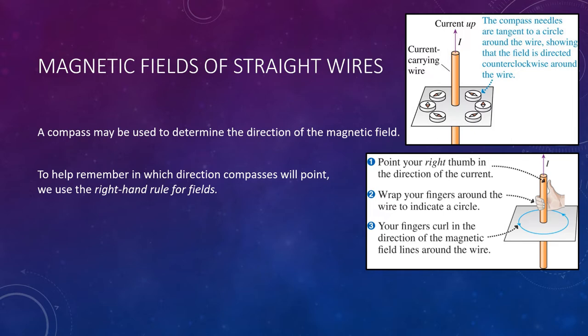To apply the right-hand rule for fields: take your right hand and wrap it around the wire. Point your right thumb in the direction of the current — note it does not work with your left hand. Then wrap your fingers around the wire to form a circle; your fingers curl in the direction of the magnetic field lines. With current upward and thumb pointing up, the field is counterclockwise. With current downward, thumb points down and fingers curl clockwise. This lets you find the field direction if you know the current, or vice versa.